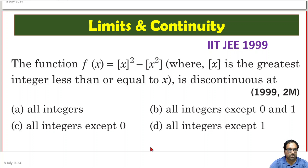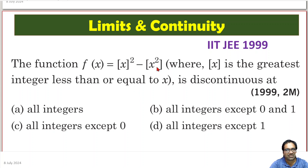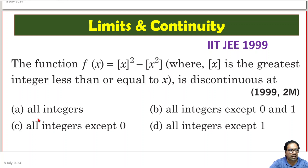We have a nice problem here: f(x) equals greatest integer function of x, whole square, minus greatest integer function of x square. The square is outside in the first term and inside in the second term. We need to determine whether the function is continuous or discontinuous across integers, specifically at 0 and 1.